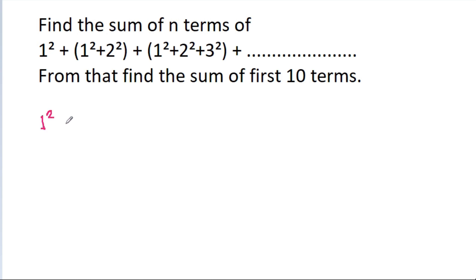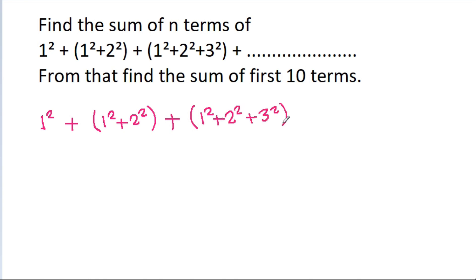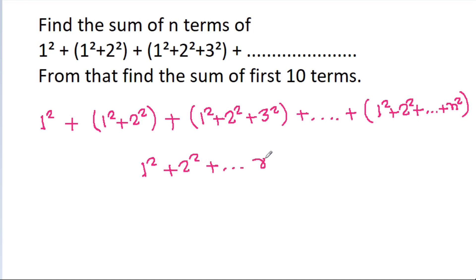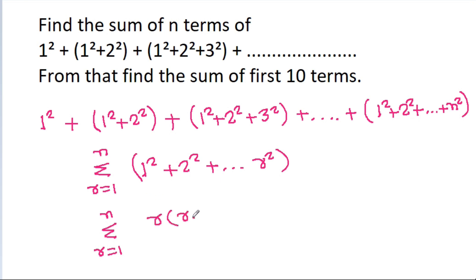The sequence is 1² + (1² + 2²) + (1² + 2² + 3²) + ... and the nth term will be 1² + 2² + ... + n². So any general term is 1² + 2² + ... + r², and we have to find the summation from r = 1 to n. The sum of squares of natural numbers is r(r+1)(2r+1)/6.